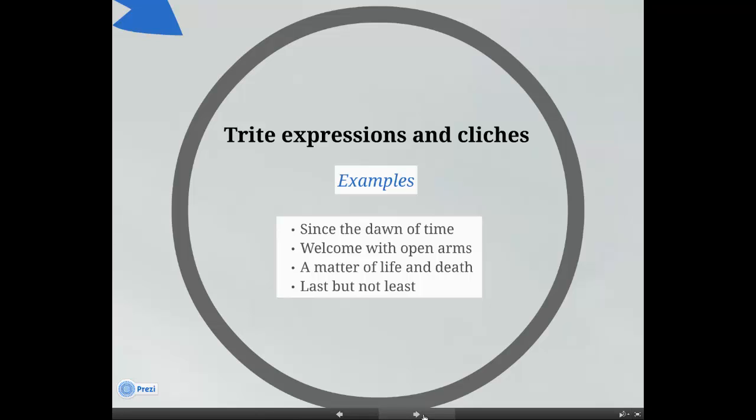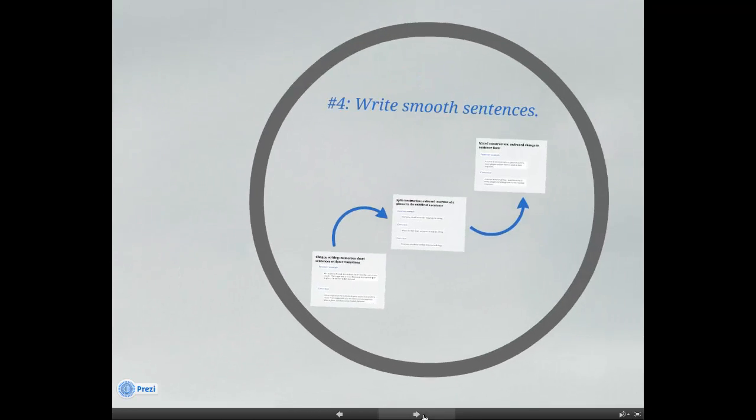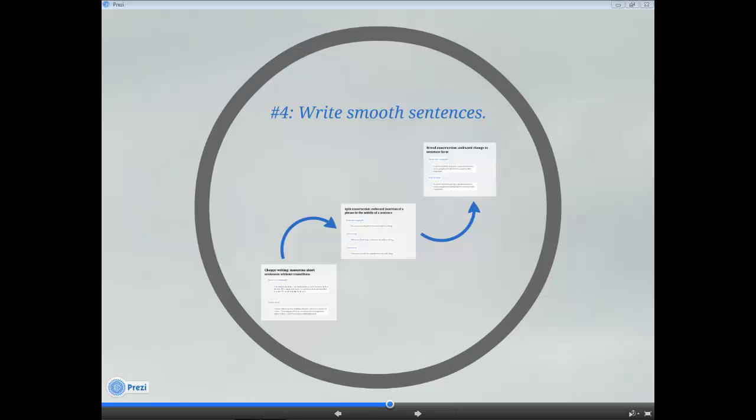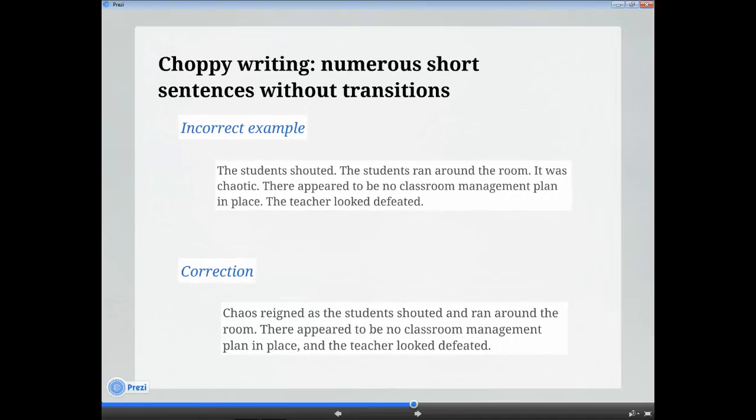Step number four: write smooth sentences. Choppy writing involves using numerous short sentences without transitions. To address this issue, try combining sentences and use transitions. Incorrect example: The students shouted. The students ran around the room. It was chaotic. There appeared to be no classroom management plan in place. The teacher looked defeated.